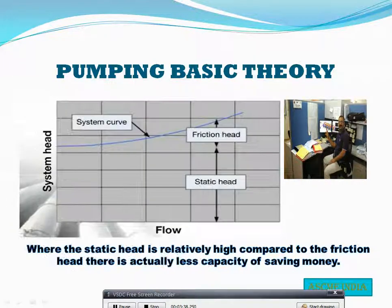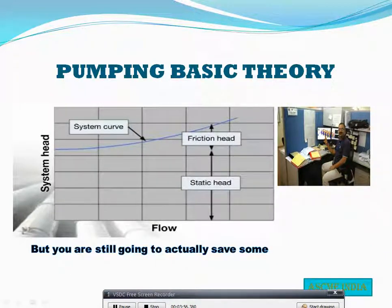Looking at the system head curve and flow: where the static head is relatively high compared to the friction head, there is actually less capacity to save money. But you are still going to actually save money.